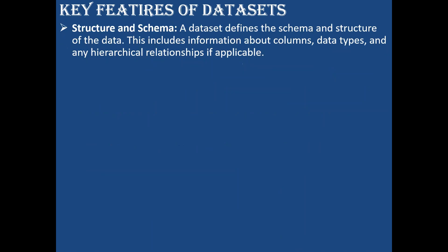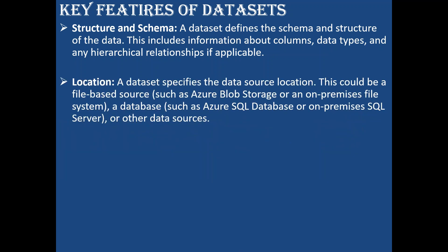Let's see the key features of datasets. First, it defines the structure and schema. Structure means in what format the data is — is it flattened columns or hierarchical? Schema means the column names and data types. So your data's schema and structure: this includes information about columns, data types, and any hierarchical relationships if applicable — for example, JSON or XML which have nested or hierarchical structures.